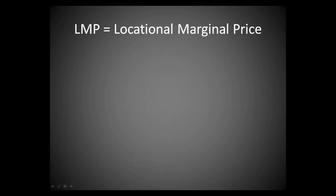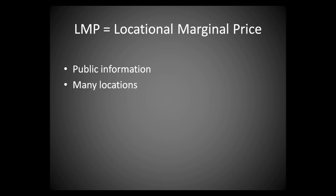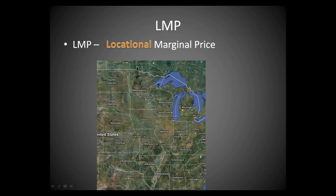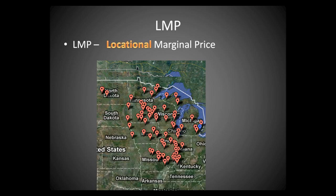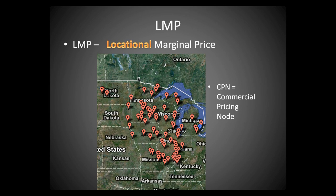LMPs are handy for estimating real-time emissions because they are publicly available, they are published for thousands of locations, and they are updated frequently — every five minutes. LMPs are locational, meaning they represent the cost to generate and deliver electricity to specific locations, called CPNs, or commercial pricing nodes.